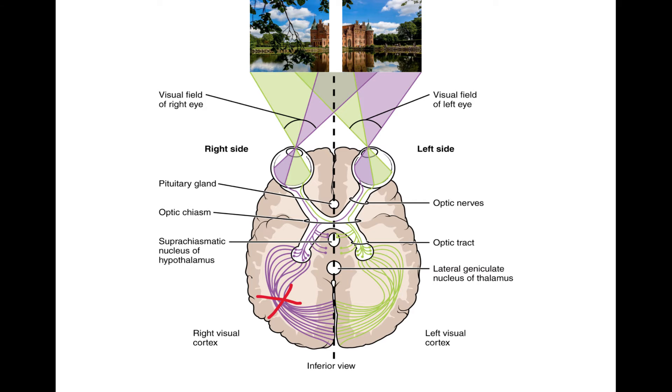Damage to the optic radiations would produce quadrant anopsia, in which a specific quadrant of the visual field is missing. Due to various crossings, damage to the superior division of the right optic radiations produces a loss of inferior visual fields, while damage to the inferior division produces a loss of superior visual fields.